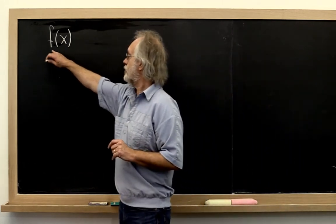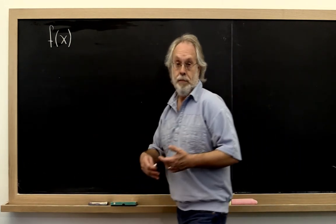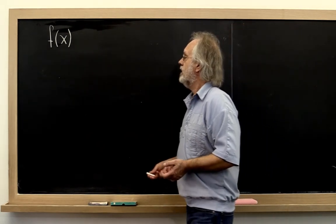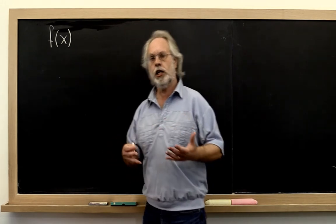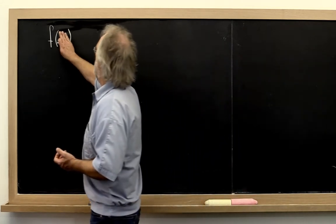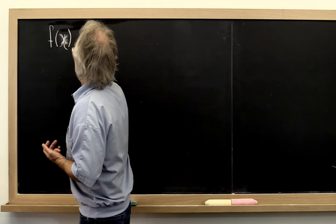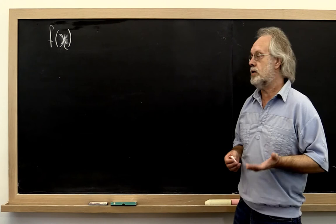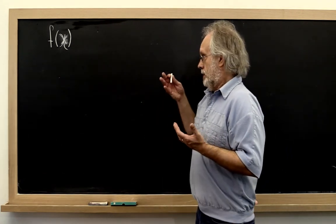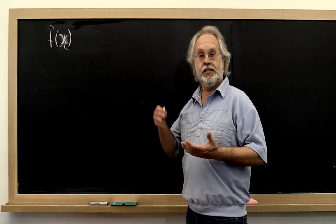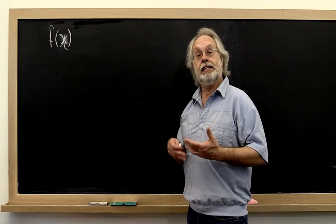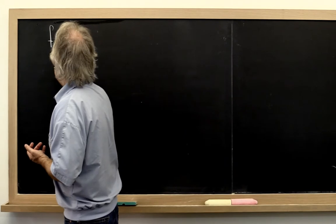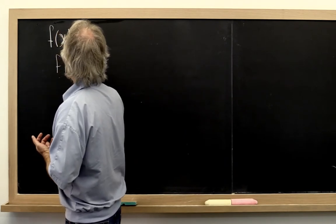If you have some function of x that is differentiable, then first of all, to make clear that this is a function of only one variable, let's make this f of chi. And what we learned in calculus was that this function attains its minimum or maximum, or is at a critical point when its derivative is equal to zero.